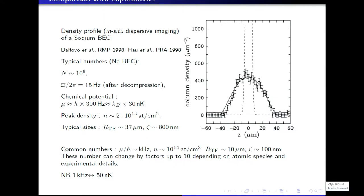I want to show an early experimental result from 1998, showing typical numbers for BEC of sodium with approximately one million atoms. The experimental data are very different from the harmonic oscillator ground state shown in dashed line, and are well reproduced by the parabolic shape corresponding to the regime of strong interactions.